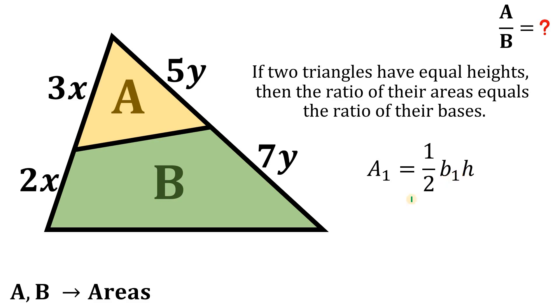In the other triangle, we have an area of A sub 2. So we have here 1 over 2 times B sub 2 with the same height.